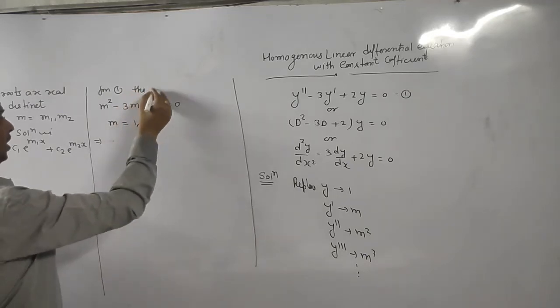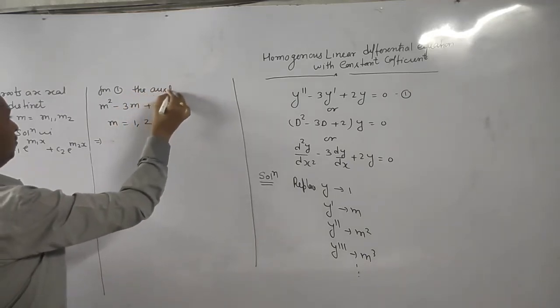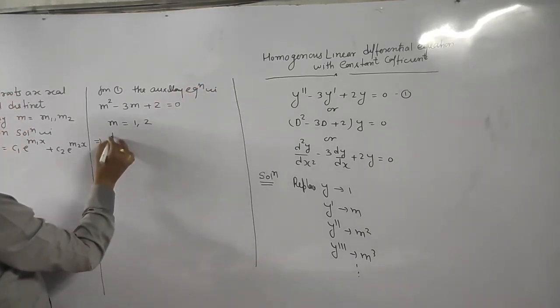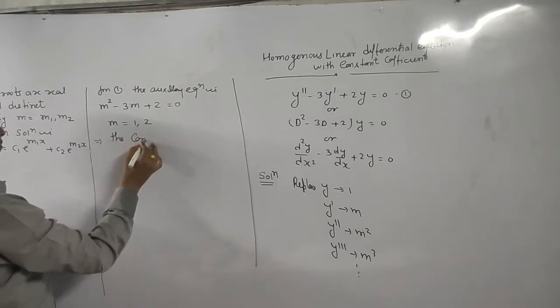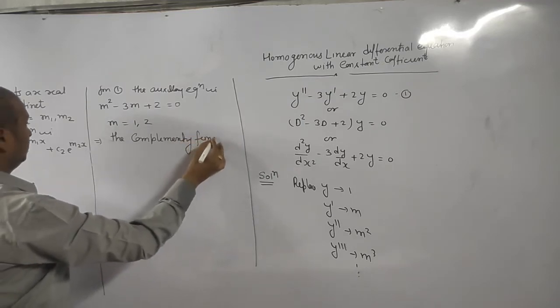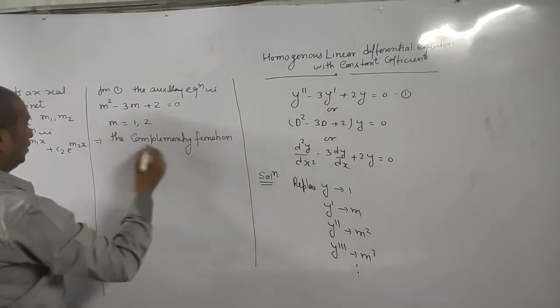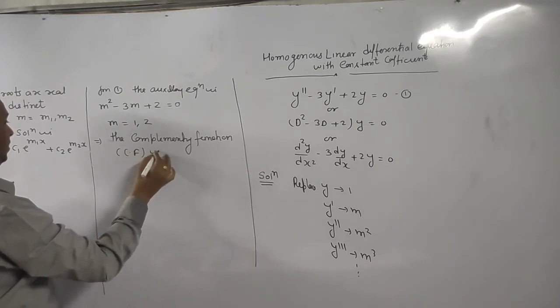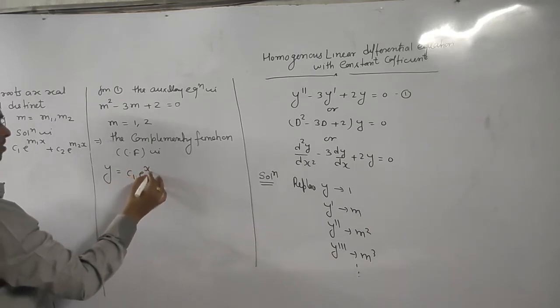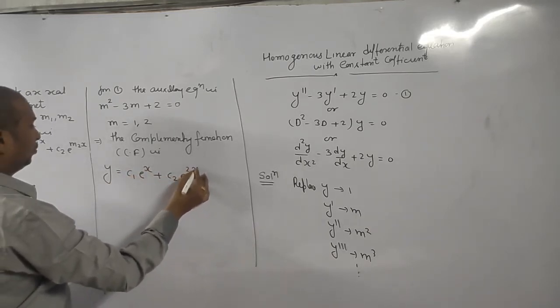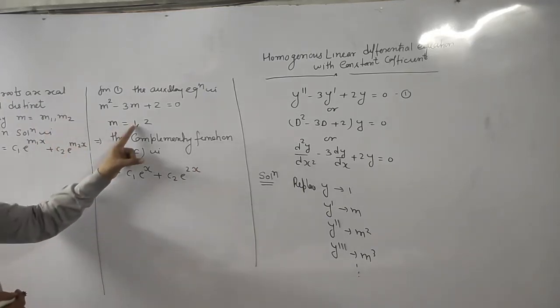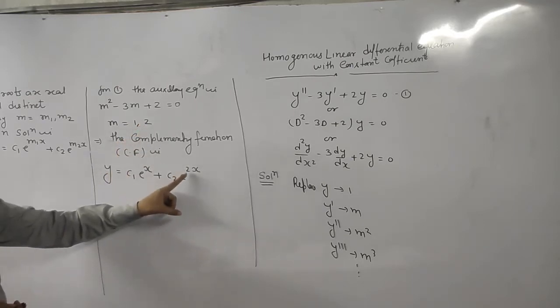So here, this equation is known as auxiliary equation. And this is complementary function, in short CF. Just we put m1 and m2 value here. What is your m1 value? 1. What is your m2 value? 2. Correct?